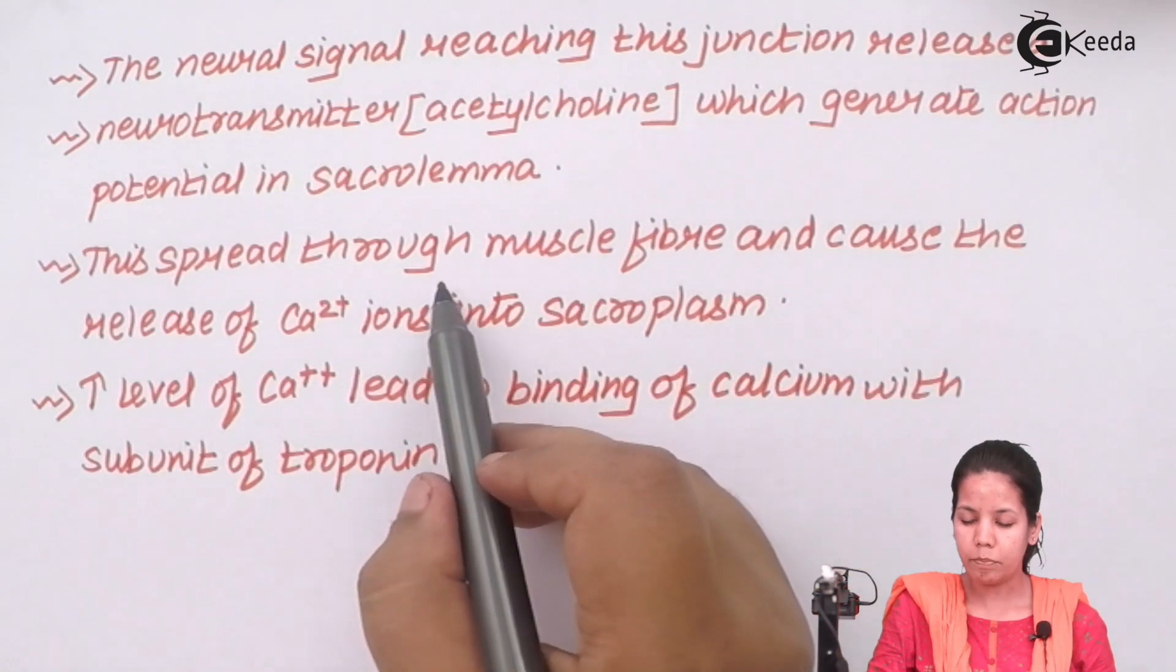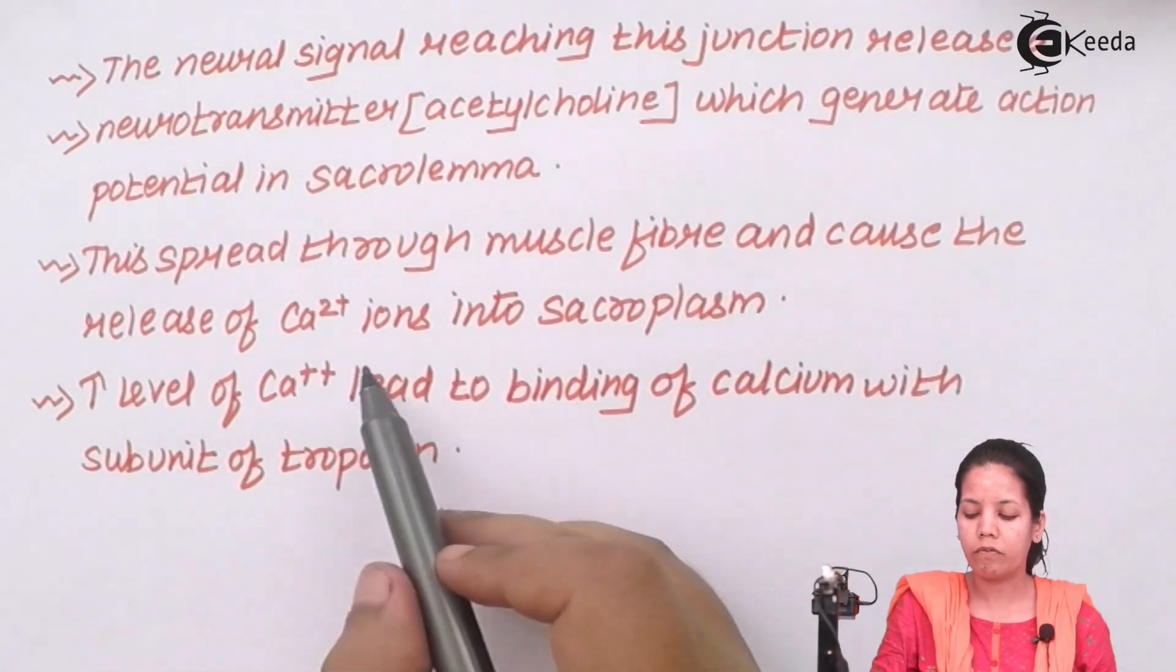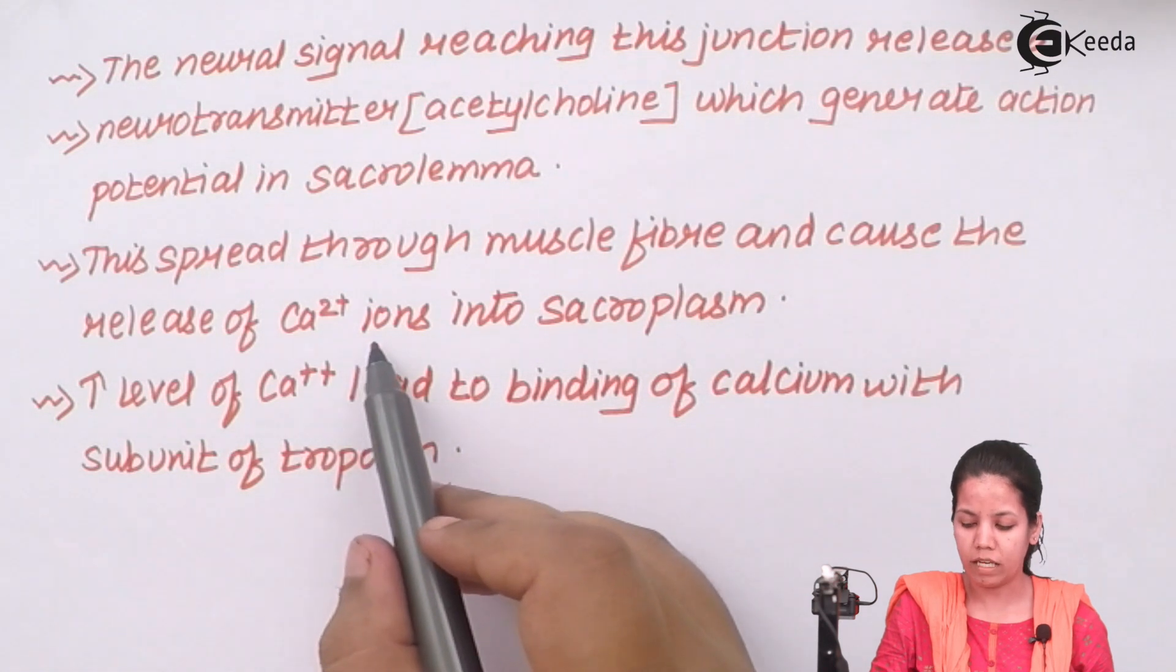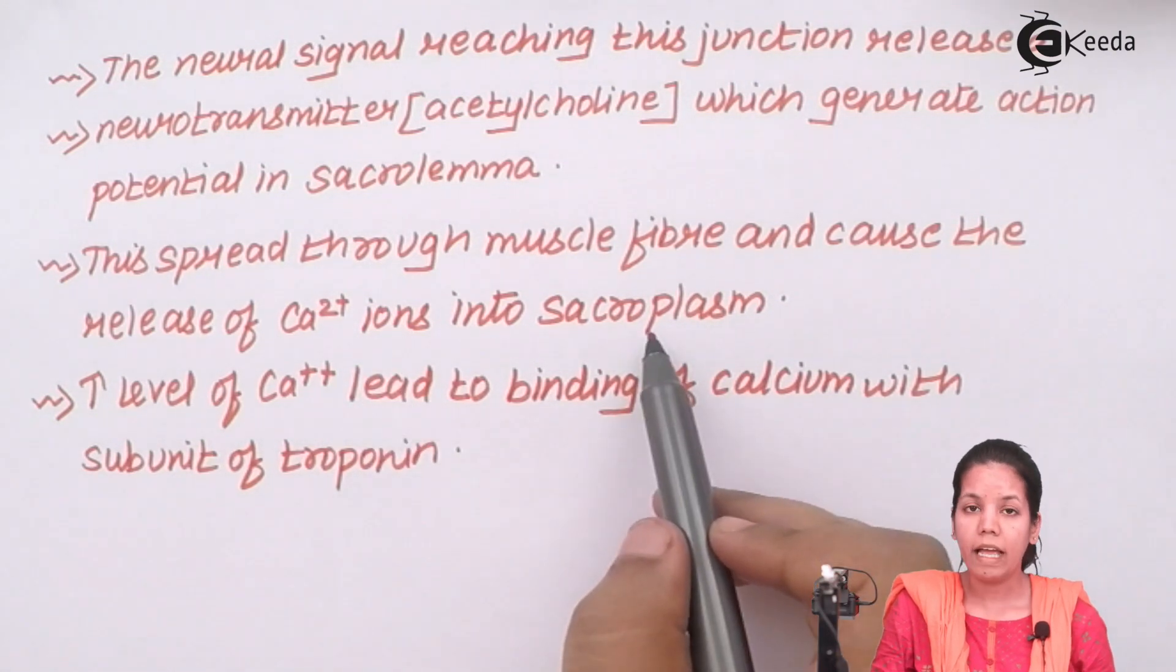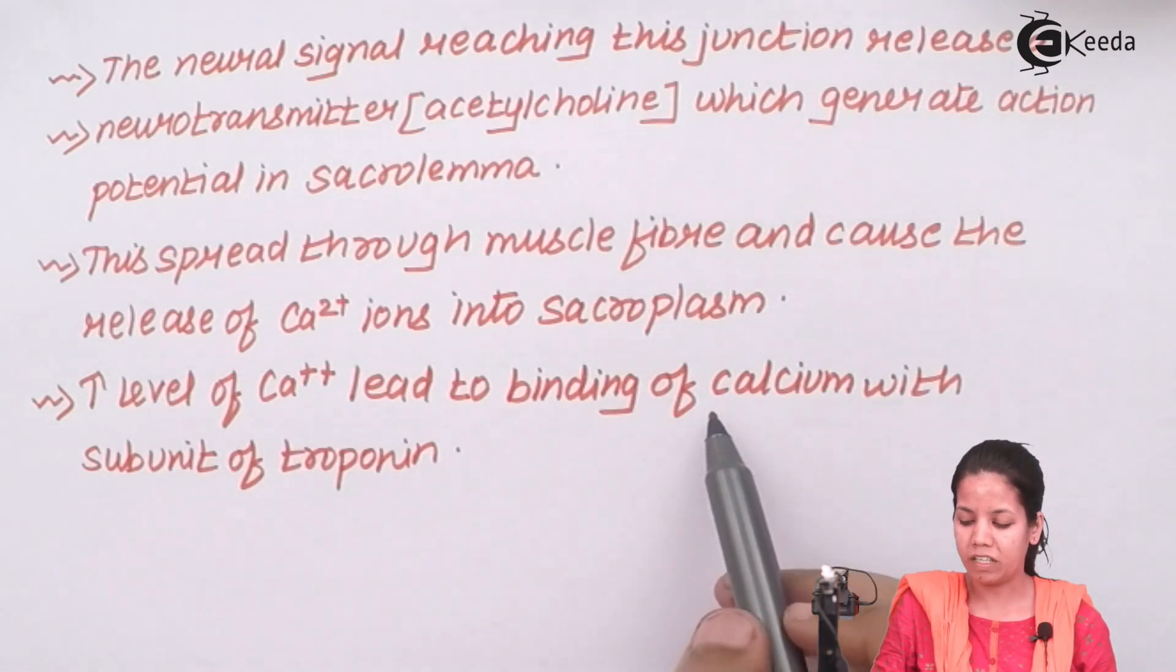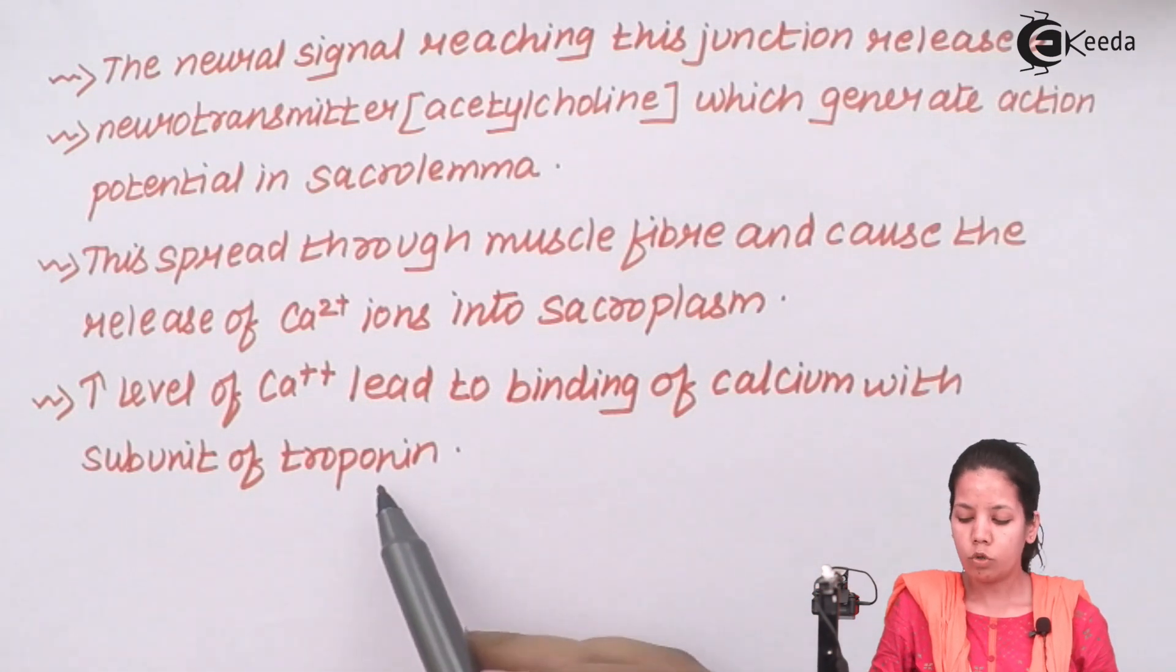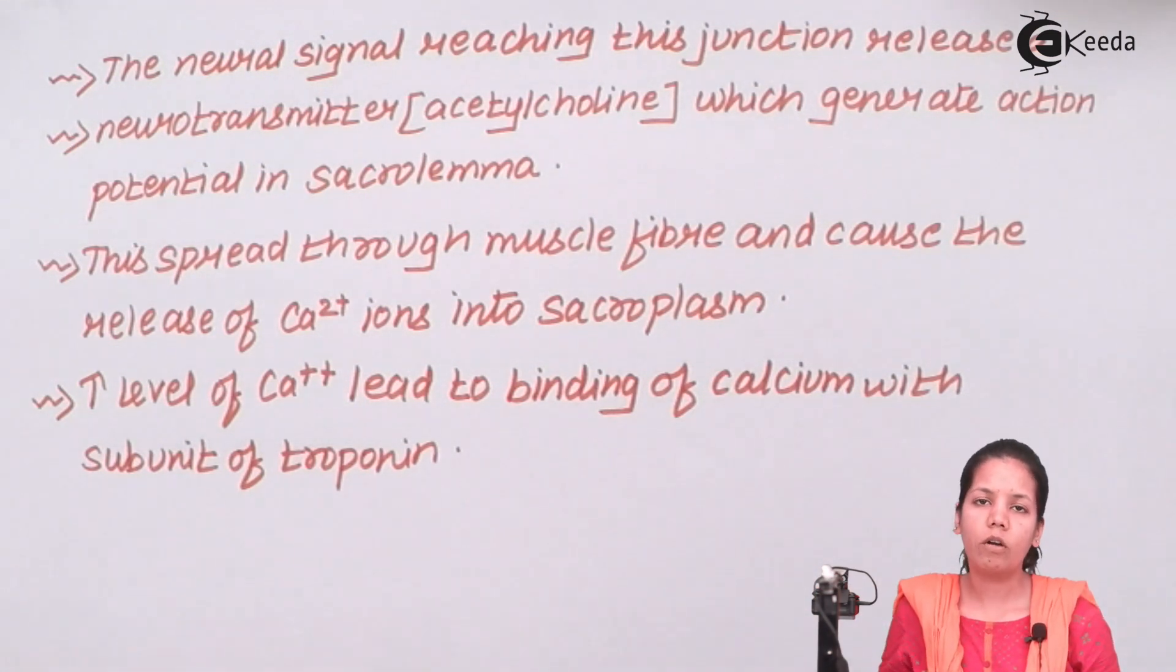Now this spreads through the muscle fibers or the light and dark bands and causes the release of calcium ions or Ca2+ ions in the sarcoplasm. As there is an increased level of Ca2+ or calcium ions, that leads to the binding of calcium with a subunit of troponin. Now troponin binding leads to the contraction of muscles or the shifting of light and dark bands.